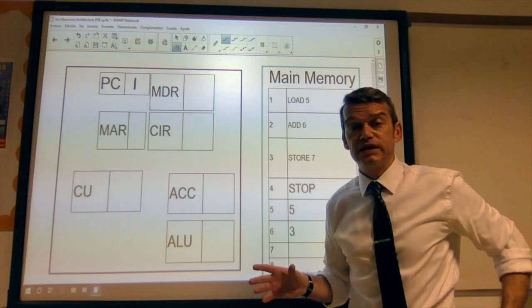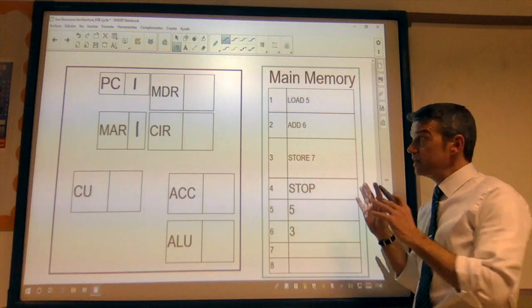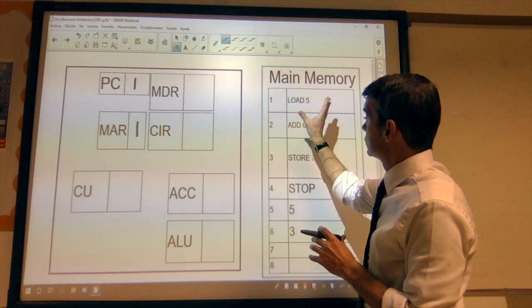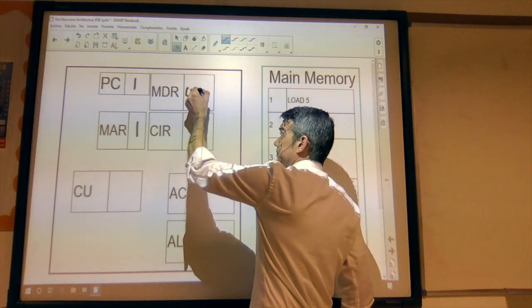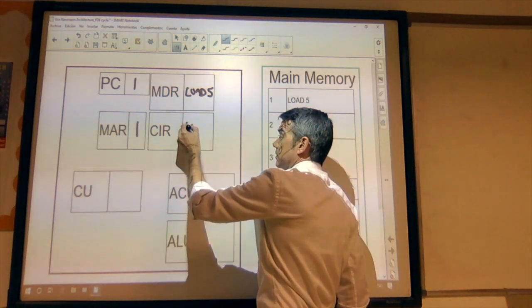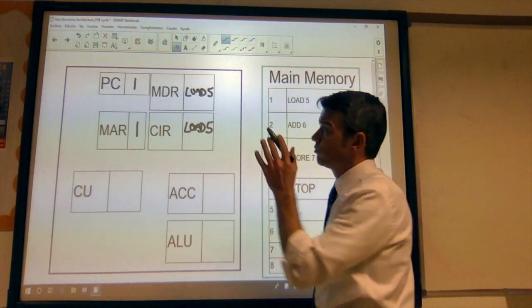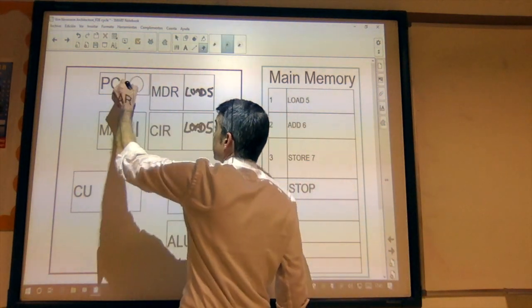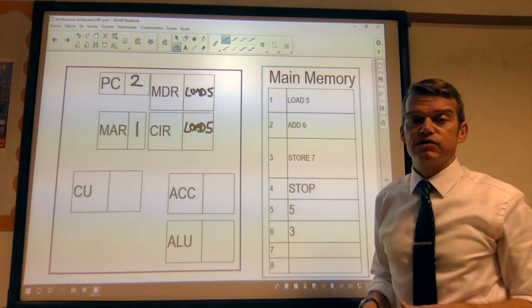We copy that address into the memory address register, and the data stored within memory location one is now loaded into the memory data register. We know that we want to get that instruction from location one — so load five is loaded. That's then copied into the current instruction register. At this point, the program counter is incremented to continue pointing at the location of the next instruction to be executed.